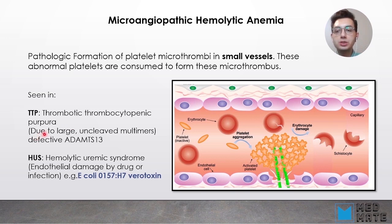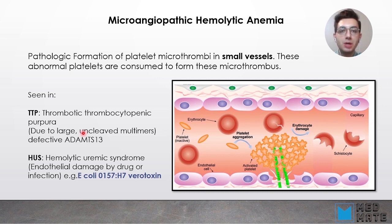TTP is due to large uncleaved multimers of von Willebrand factor. Normally, an enzyme called ADAMTS13 cleaves these multimers into monomers. When there is a defective ADAMTS13 enzyme, we get TTP.